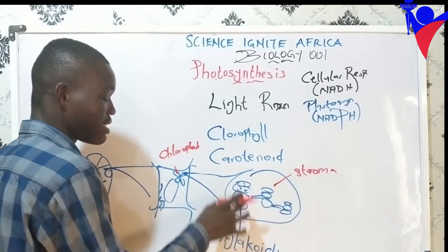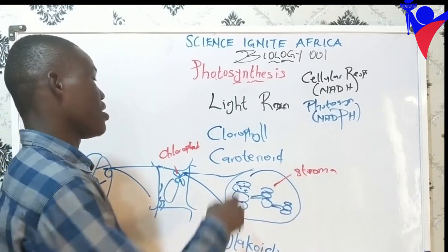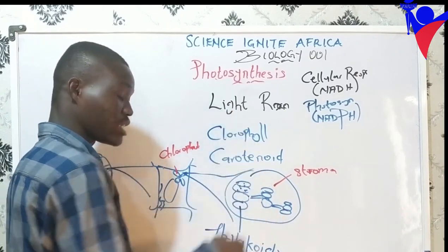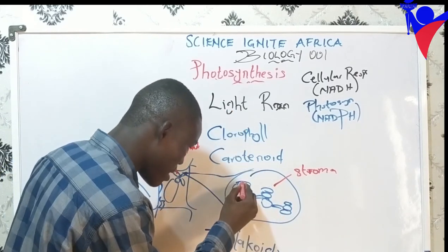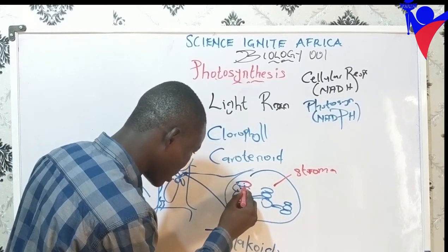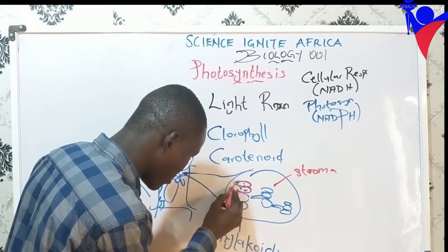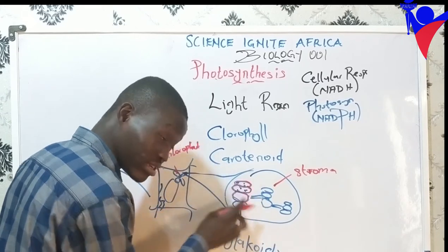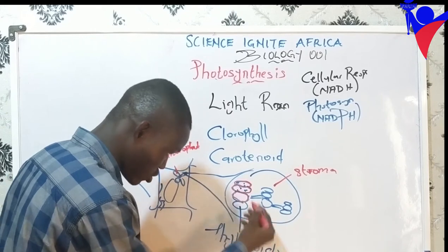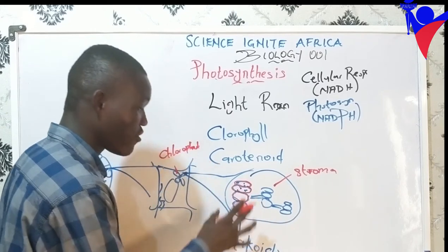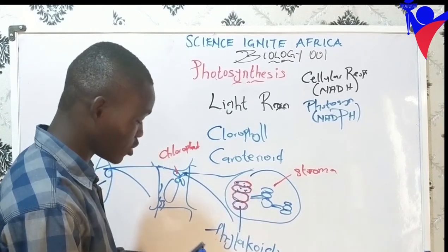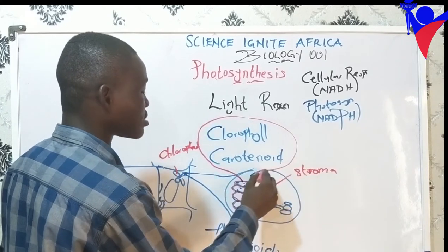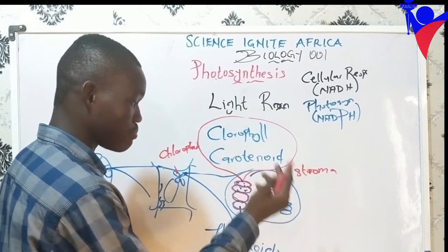So inside the thylakoid is where the light reaction takes place — on the membrane of the thylakoid, this membrane right here. We are just looking at the thylakoid; it's where photosynthesis takes place. This membrane contains chlorophyll and other pigments.